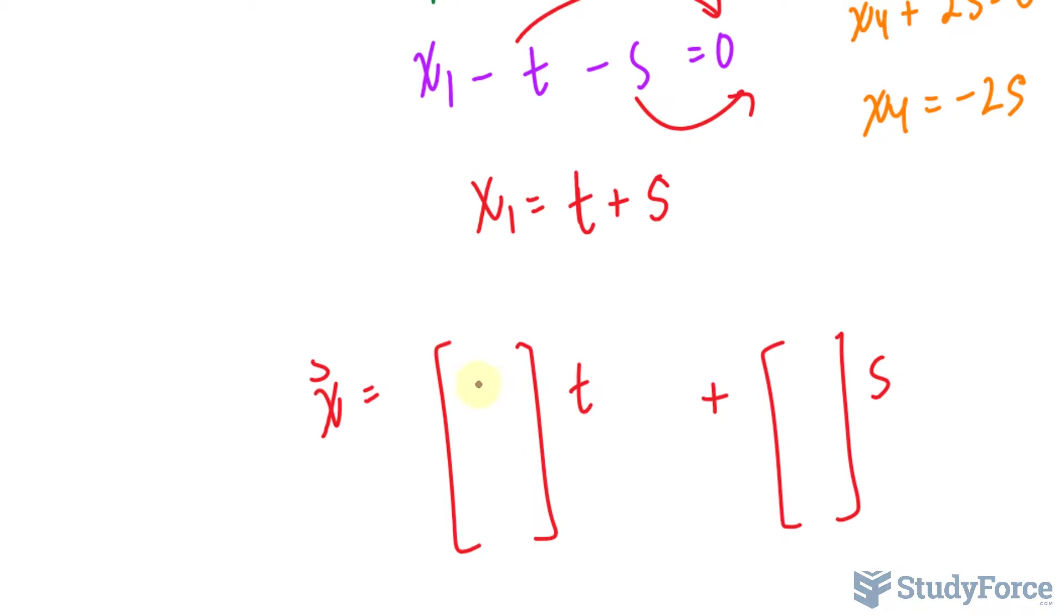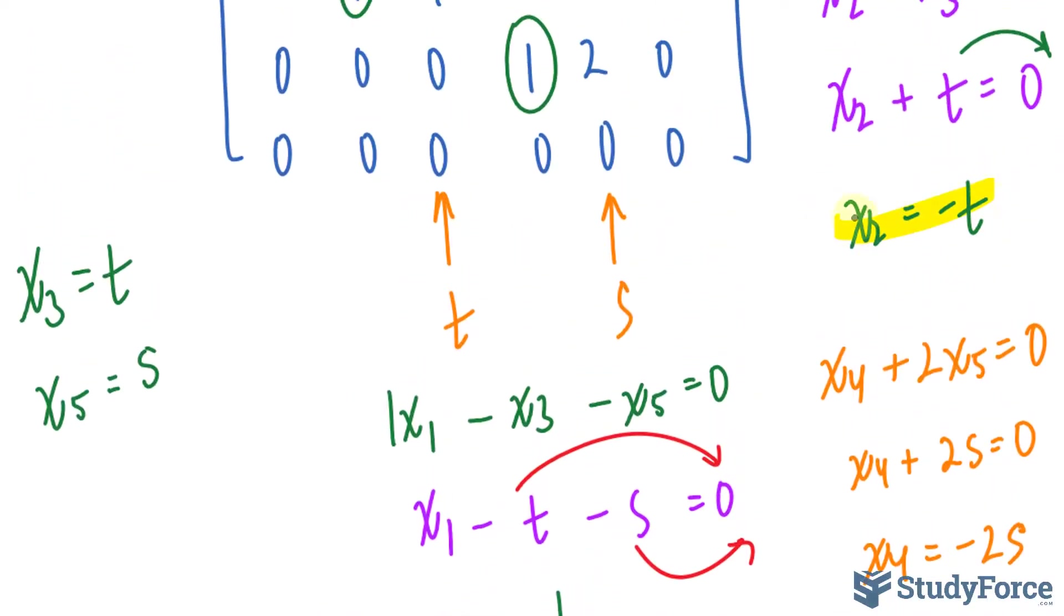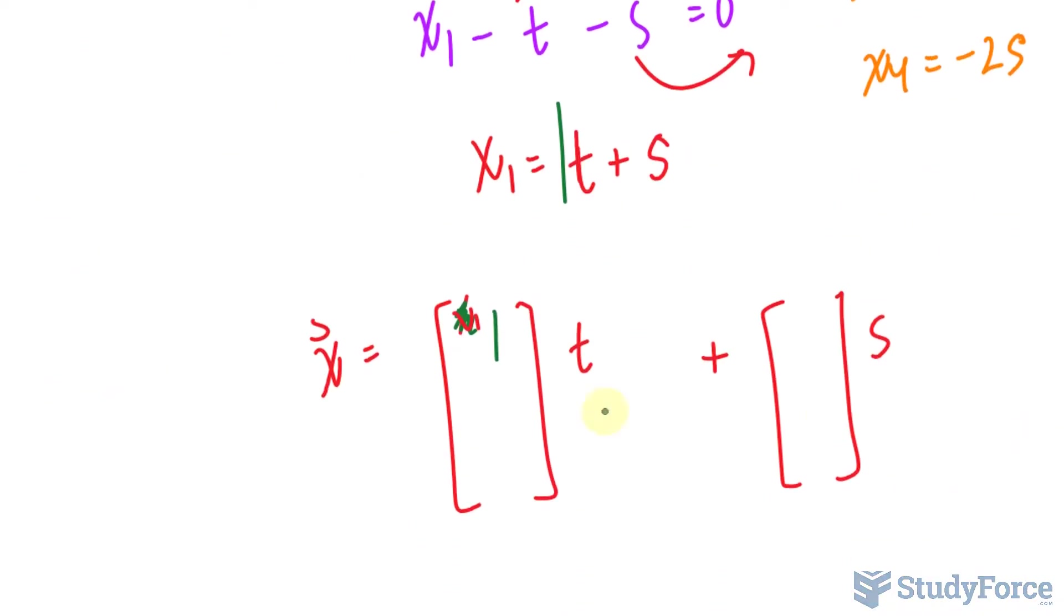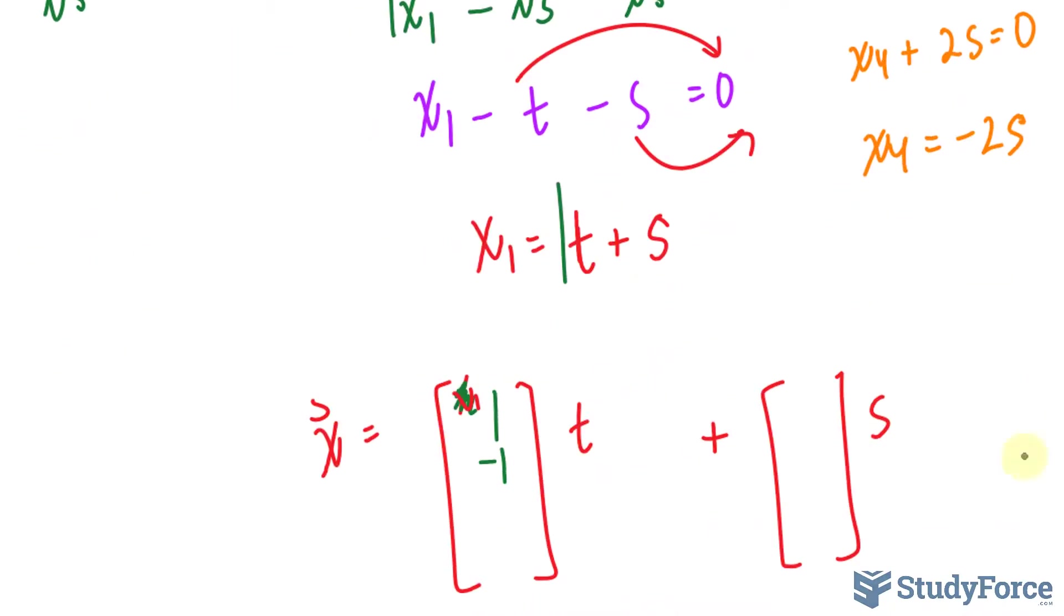For t, that very first spot will be x sub 1 and when we're relating t and x sub 1, t has a coefficient of 1. So, replace that very first row with 1. In this equation, we're relating t with x sub 2 and it has a coefficient of negative 1. So, write x sub 3 is equal to t. That coefficient is 1.